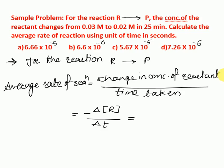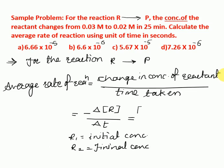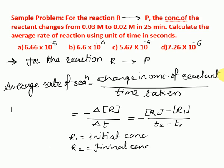The concentration changes from 0.03 molar to 0.02 molar. So the initial concentration R1 was 0.03 and the final concentration R2 is 0.02. We write: minus the quantity (final concentration of reactant minus initial concentration of reactant), divided by T2 minus T1, the total time taken for the completion of this reaction.